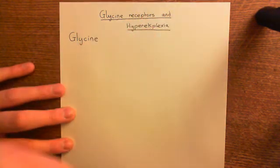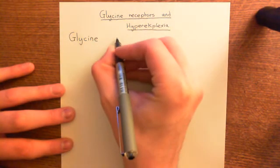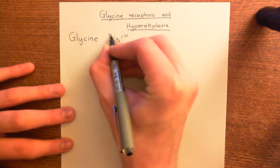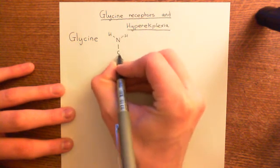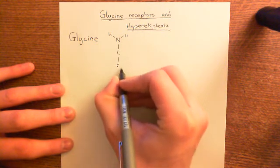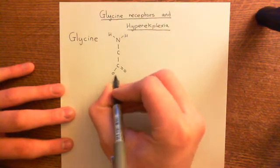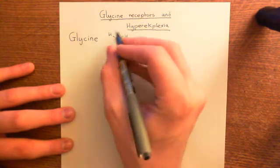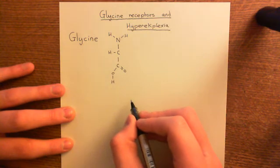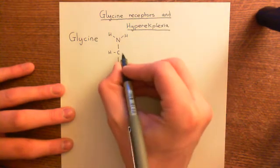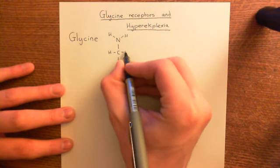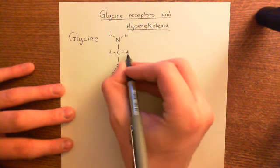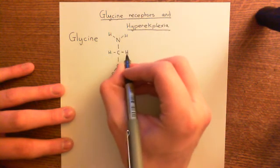Glycine is a proteinogenic amino acid. Here is the amino group, and then we have the alpha carbon coming off here, and we also have this carboxylic acid group also coming off the alpha carbon in the centre. And then off the alpha carbon we have a hydrogen. This is the core amino acid structure for all proteinogenic amino acids. In the case of glycine, it's the simplest because the R group is simply a hydrogen. So this is the structure of the amino acid glycine.